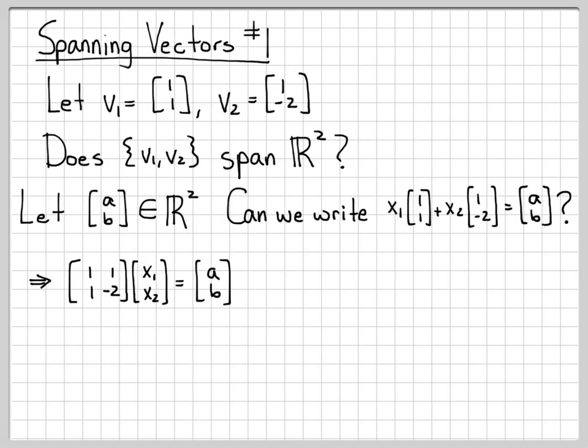We could also write this like this. Here's the vector formulation of this equation. Here's more of the matrix formulation of this equation. Is it possible for me to find some unknowns, x1 and x2, to make this equation true for any values of a and b?